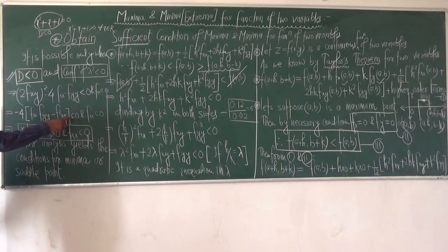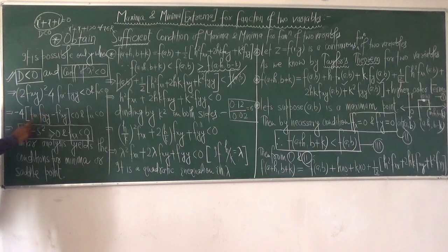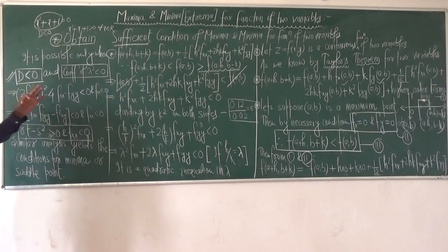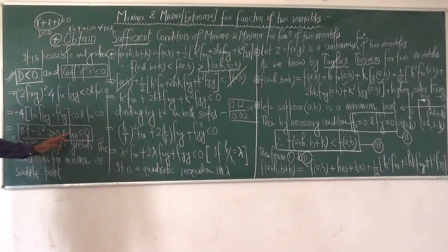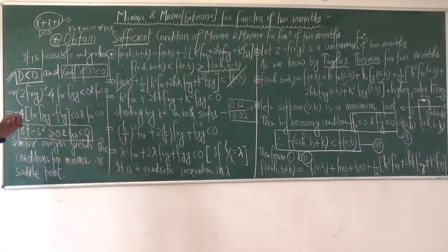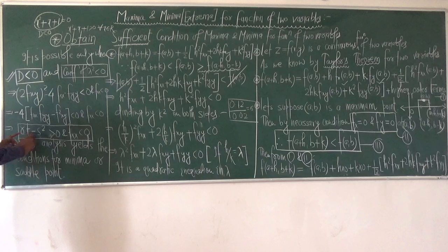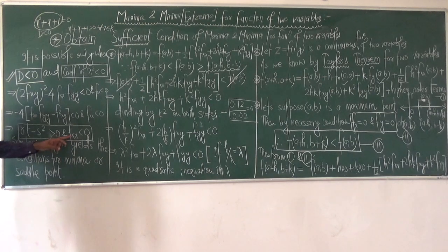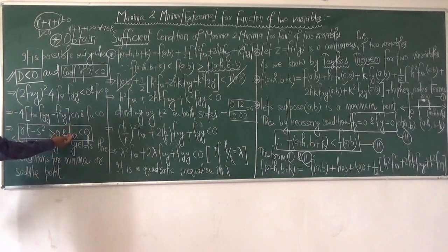After reversing the inequality sign, we obtain the sufficient condition for a maximum point. Taking fxx = r, fyy = t, fxy = s, the condition becomes: rt - s² > 0 and fxx < 0. By similar analysis, the sufficient condition for a minimum point is: rt - s² > 0 and fxx > 0.